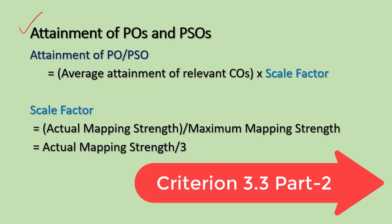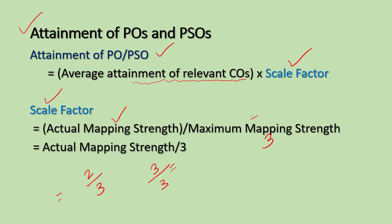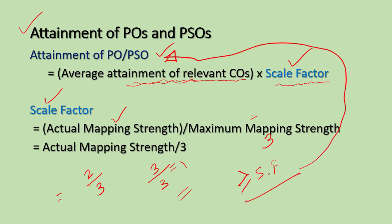For the attainment of POs and PSOs, the formula used is: attainment level of PO or PSO equals the average attainment of relevant COs multiplied by the scale factor. The scale factor is the actual mapping strength divided by the maximum mapping strength, which is 3. So if the mapping strength is 2, the scale factor is 2/3. If the mapping strength is 3, the scale factor is 1, meaning it does not affect the attainment level at all. It is important to have higher values of scale factor to get better attainment levels.